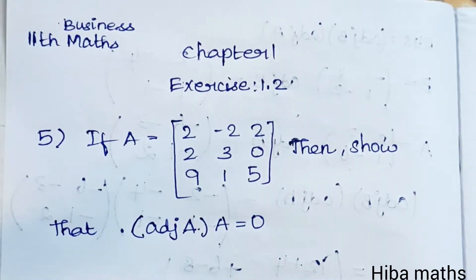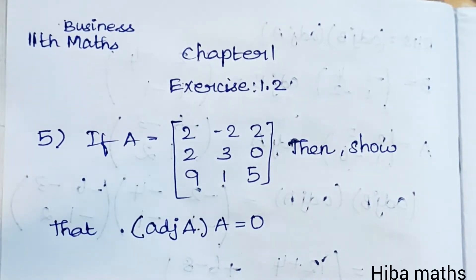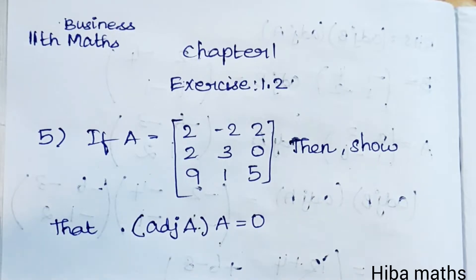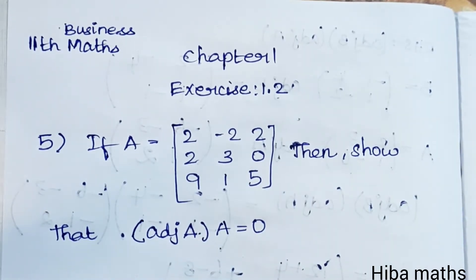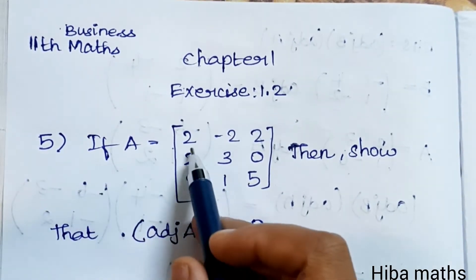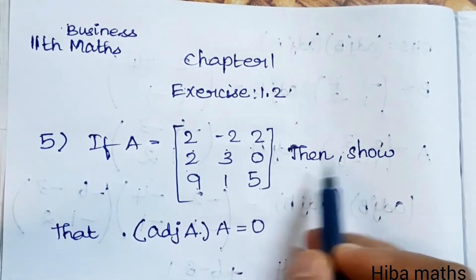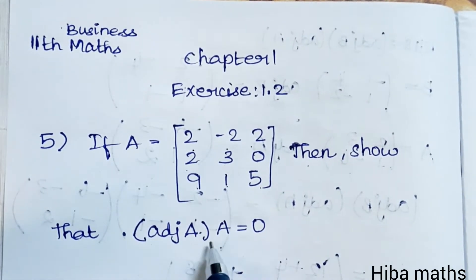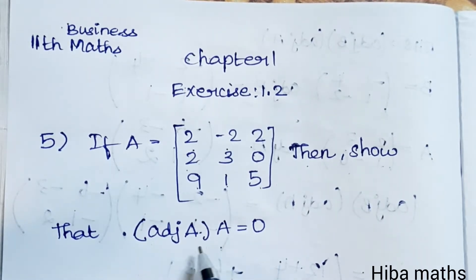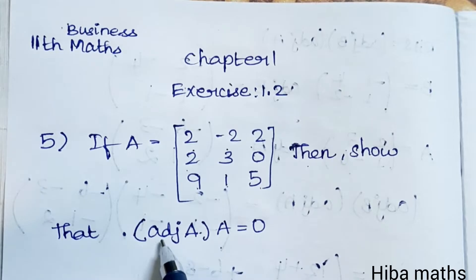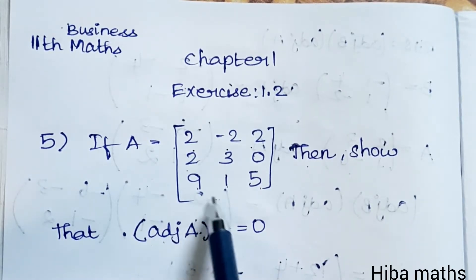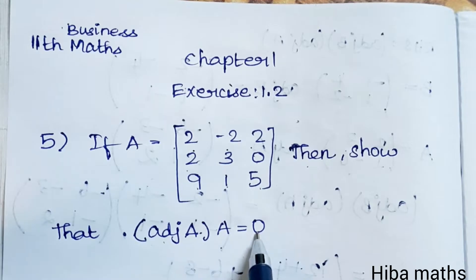Hello students, welcome to Hibamaks 11th Standard Business Maths Chapter 1. Exercise 1.2, 5th question: If A is equal to the matrix [[2, -2, 2], [2, 3, 0], [9, 1, 5]], then show that adjoint of A into A is equal to the zero matrix. So we have to find adjoint of A and then multiply by A to prove it equals zero.